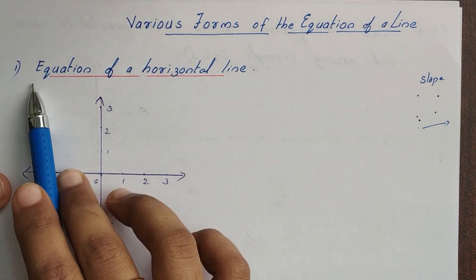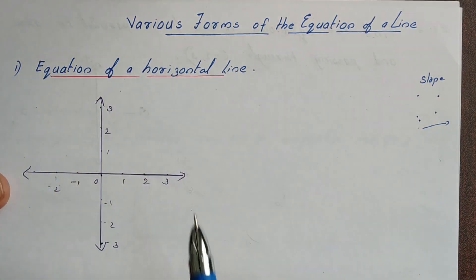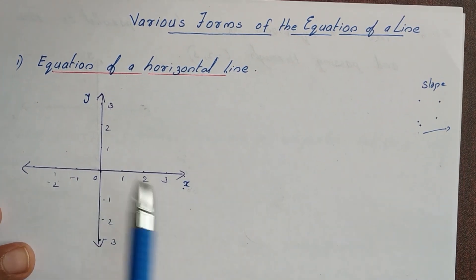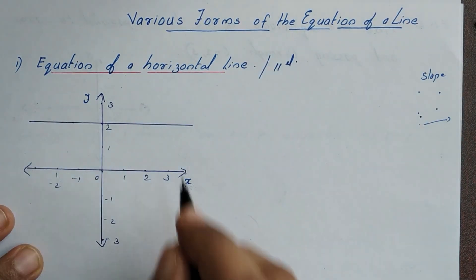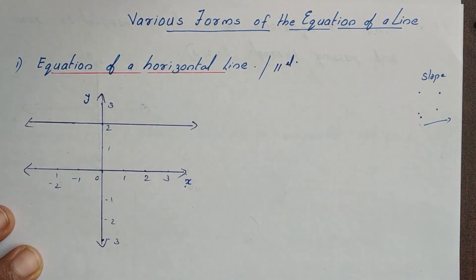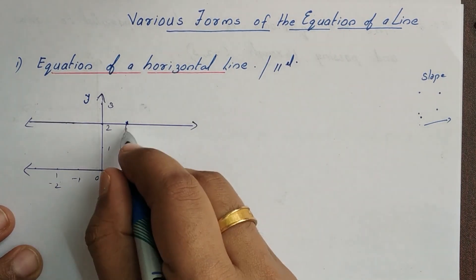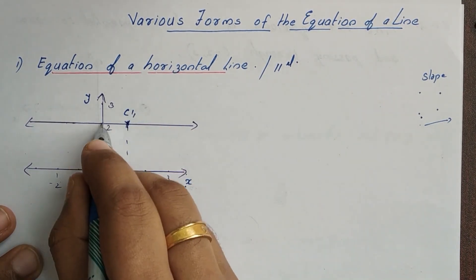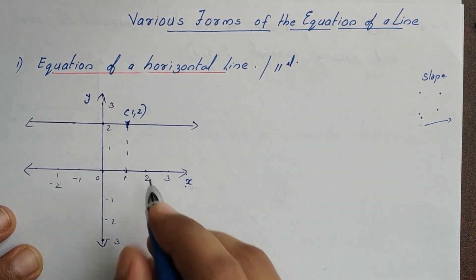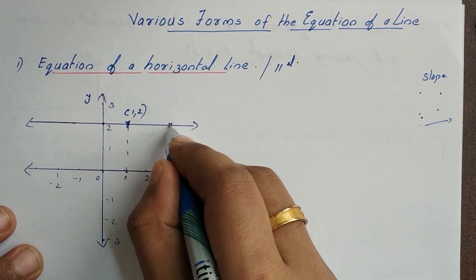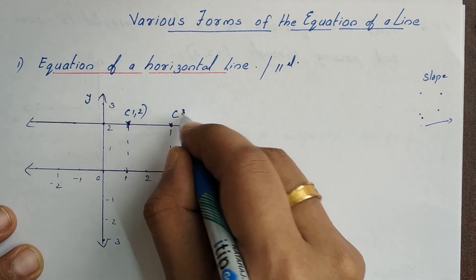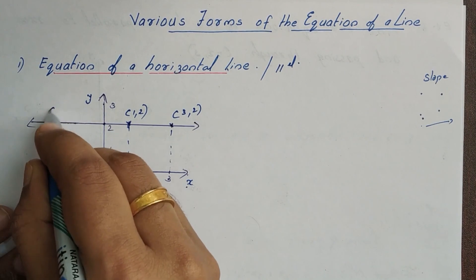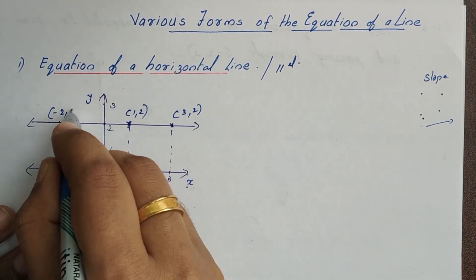Now, let's try the equation of a horizontal line. A horizontal line is parallel to the x-axis. We choose coordinates: one point has x-coordinate 1 and y-coordinate 2, another point has x-coordinate 3 and y-coordinate 2, and another has x-coordinate 2 and y-coordinate 2. Notice the y-coordinate is always 2 across all these points.